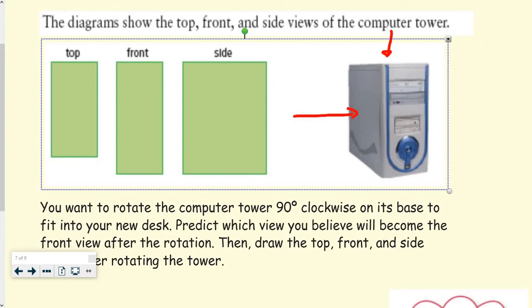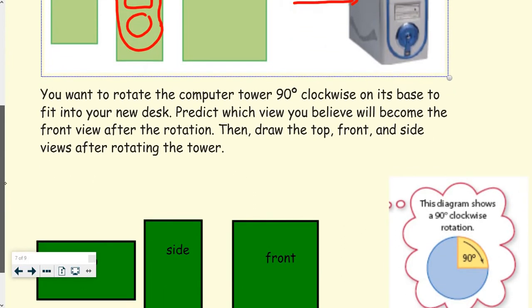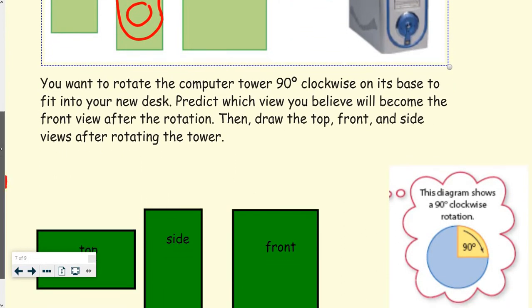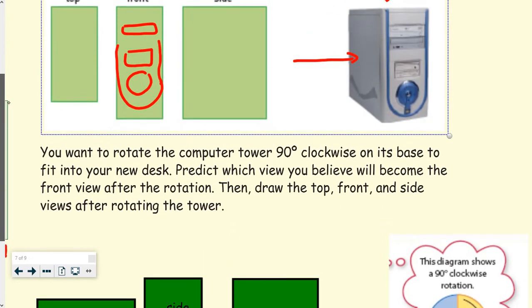And the front is, you know, there would be the U there with the circle and then the different drives in here. So that's the front view. So you want to rotate the computer 90 degrees clockwise on its base to fit in your new desk. Predict which view you will believe will become the front view after the rotation. So if we rotate this 90 degrees,